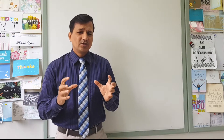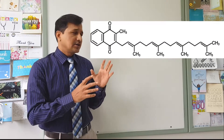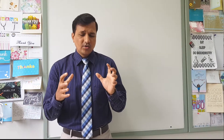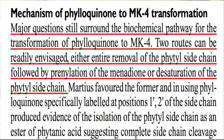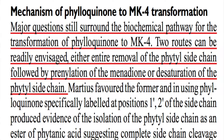What happens to phylloquinone in extra-hepatic tissues? Recent research shows that the majority of phylloquinone is converted into MK4 - menaquinone 4 - which has a different number of isoprenoid units at carbon 3. MK4 is the major metabolic fate of phylloquinone in extra-hepatic tissues. Most of the phylloquinone in chylomicron remnants - after the liver - is taken up by bone, especially osteoblasts. Inside the osteoblast, phylloquinone is converted into menaquinone through desaturation of the phytol side chain.